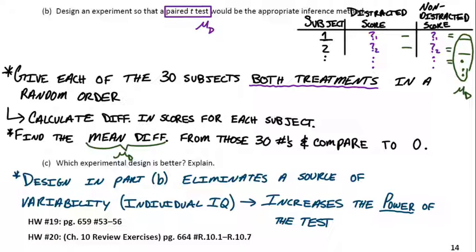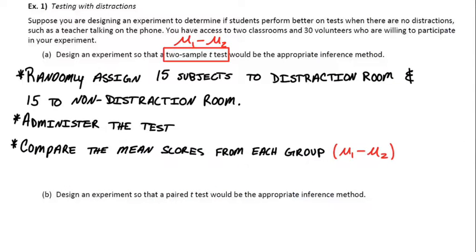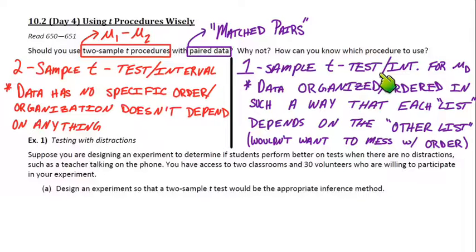Okay, so these are the last notes for chapter 10. We talked about when to use two-sample T procedures, when to use one-sample or matched pairs procedures. So that is all for these notes. I'll see you in class.